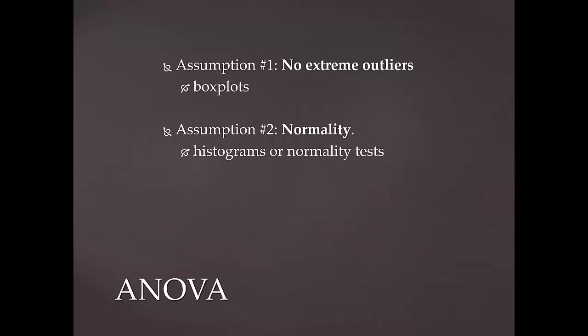We have the assumption of no extreme outliers, the assumption of normality, and finally, the assumption of homogeneity of variance. The homogeneity of variance assumption assumes that the population distributions have the same variance. If this assumption is violated, the averaging of our variances is not valid.